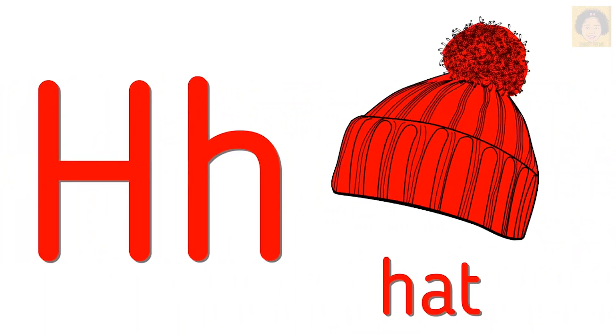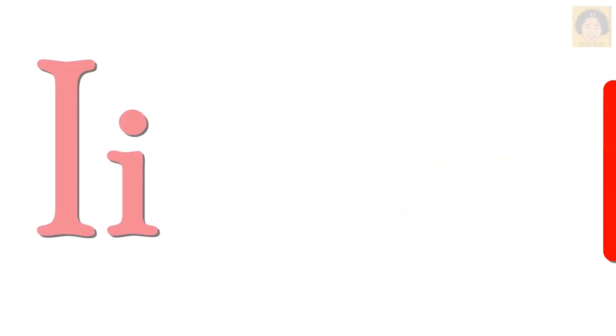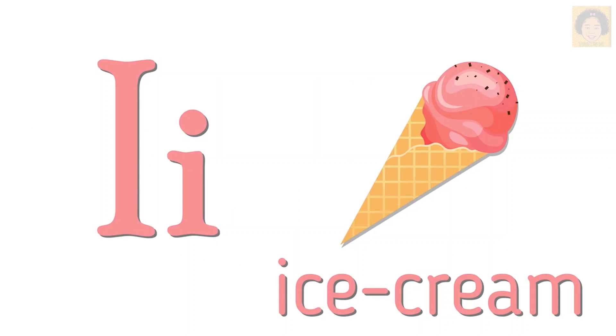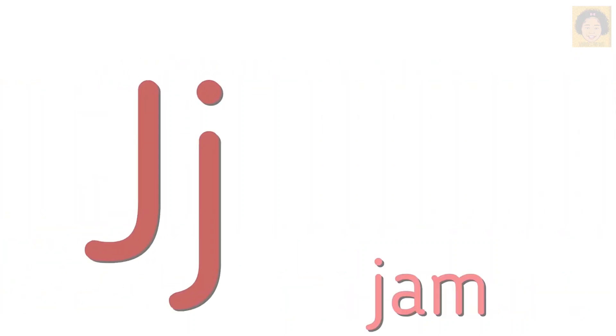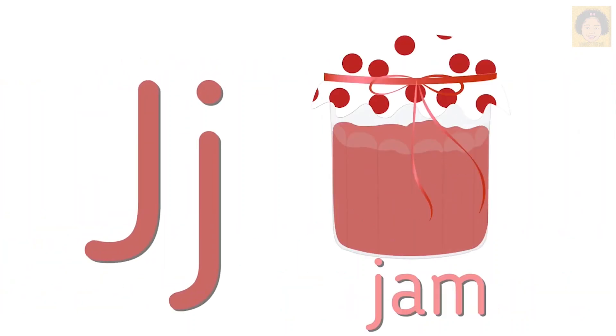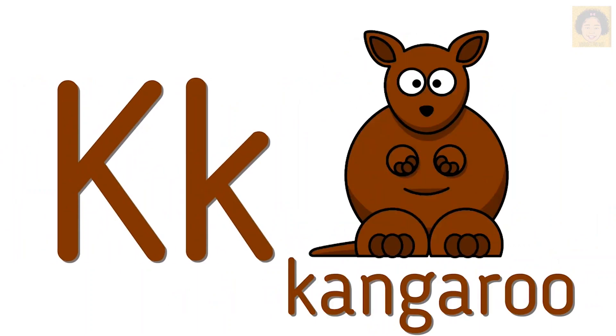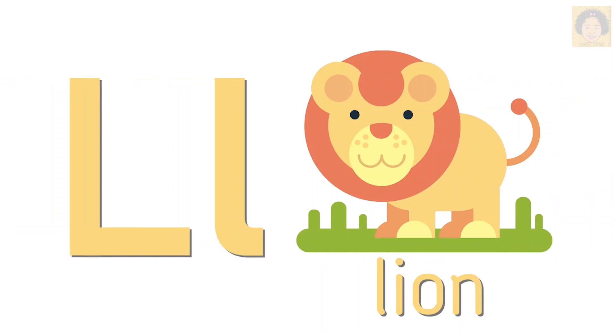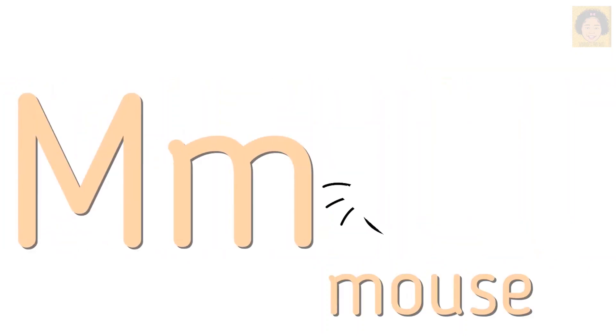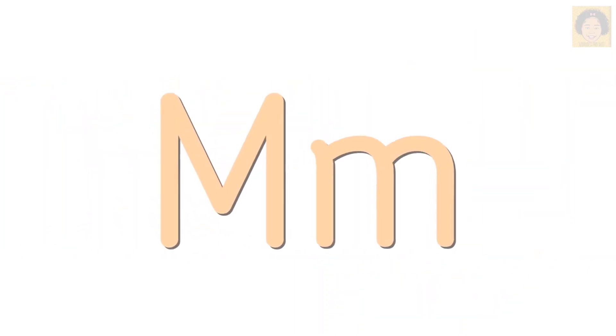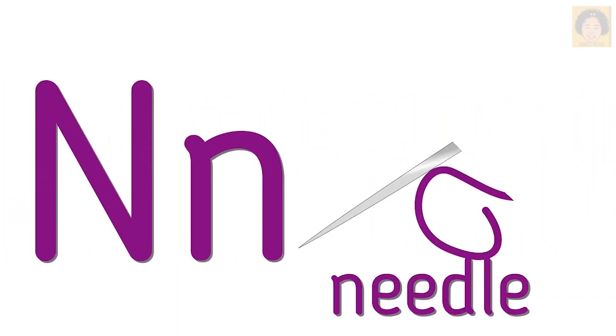H is for hat. I is for ice cream. J is for jam. K is for kangaroo. L is for lion. M is for mouse. N is for needle.